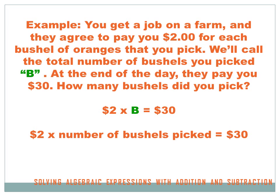Well, they tell you they're going to pay you $2 for each bushel you pick — $2 times the number of bushels. But we decided to call the number of bushels B, so B stands for the number of bushels. So $2 times B equals $30. With algebra we could then solve that equation and figure out what B equals, or how many bushels you picked.